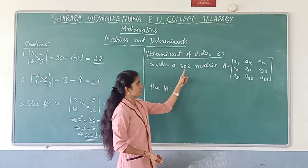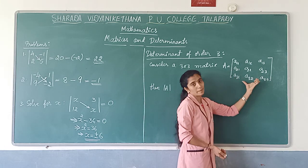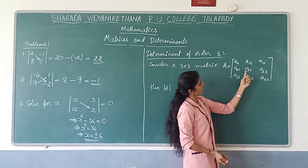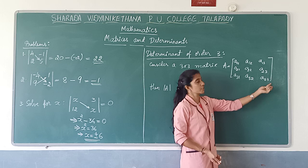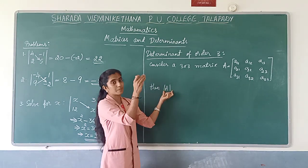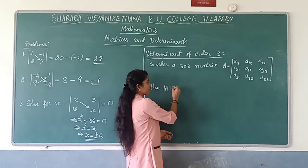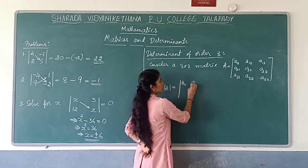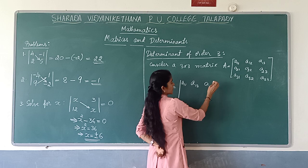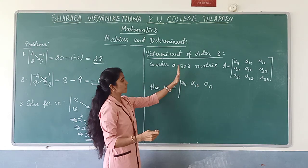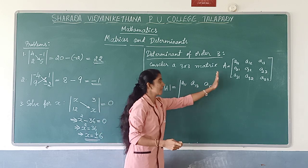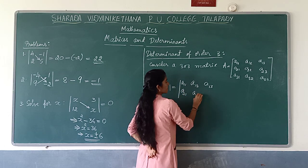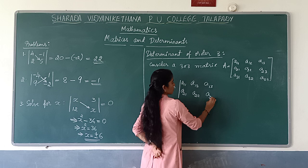I have considered a general 3×3 matrix A. We write the elements as A11 (first row, first column), A12 (first row, second column), A13 (first row, third column), and so on. When it comes to determinants we write the elements between two vertical lines, whereas for a matrix we use closed brackets.